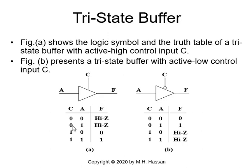If C is zero, whether A is zero or one, F will be high Z or high impedance. But once C is active (one), if A is zero, F will be equal to zero; if A is one, F will be equal to one — so F will be equal to A. This is really like a pass gate, allowing us to pass information from A, the transmitting device, to the bus at output F.